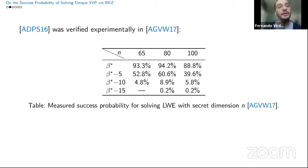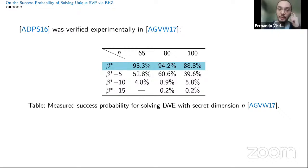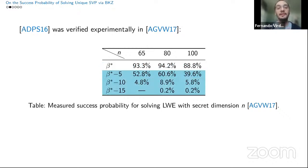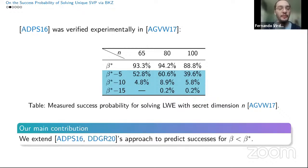The Alkim et al. heuristic was verified experimentally in 2017 by Albrecht et al. They ran multiple experiments and observed that if one chooses the block size following the Alkim et al. heuristic, the success probability for solving LWE is very high. However, they also observed that if one chooses slightly smaller block sizes — resulting in a cheaper attack — it is still possible to get relatively high success probabilities. The main contribution of our paper is that we extend the Alkim et al. model and related work by Ducas-Nguyen to predict the success probability of any given block size, and particularly of these slightly smaller block sizes.